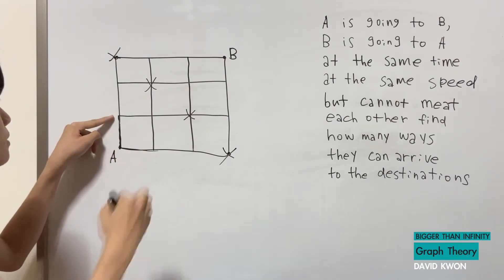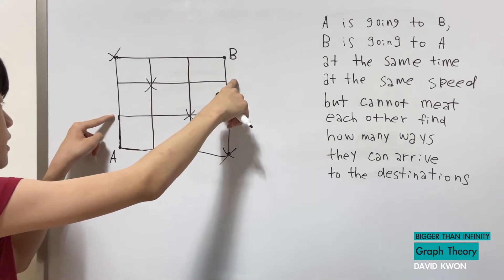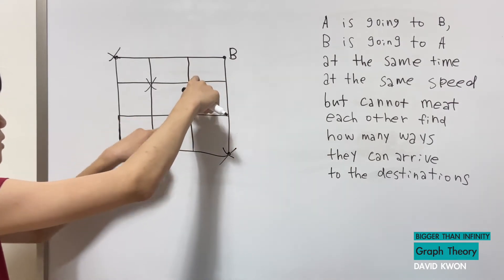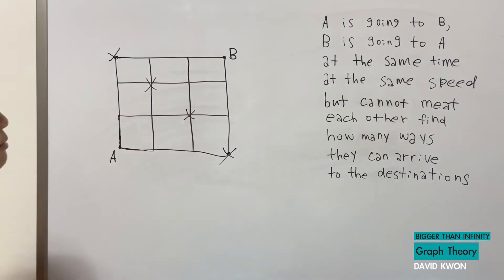If A goes this way once, B cannot go there twice so B has to go here once. Let's say A goes here, B goes here, A goes here, B goes here, okay? That's where they meet and A goes here, B goes there. That's where they meet.